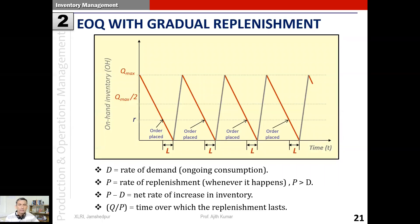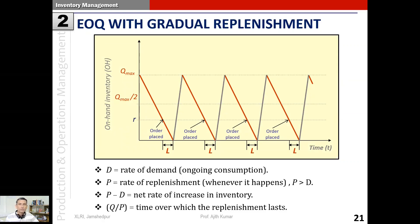Demand rate is d as before - that's the ongoing consumption. p is the rate of replenishment. Whenever a quantity is ordered, after some initial lead time or setup time, production begins and inventory is continuously added over some time at a rate of p. Even as the inventory is replenished, demand does not stop - it is ongoing. Therefore the inventory does not increase at a rate of p; its net rate of increase is p minus d.